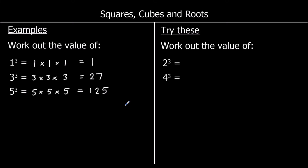2 cubed is 2 times 2 times 2. 2 times 2 is 4, and 4 times 2 is 8. And 4 cubed: 4 times 4 is 16, and then 16 times 4 is 64.